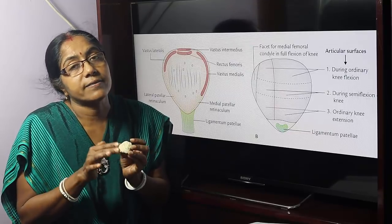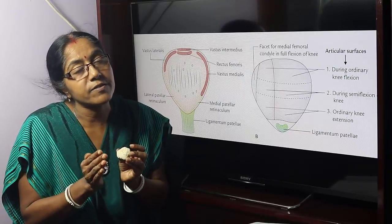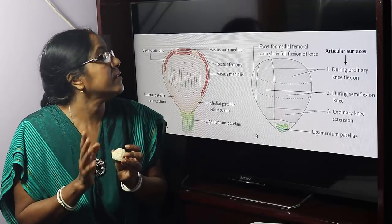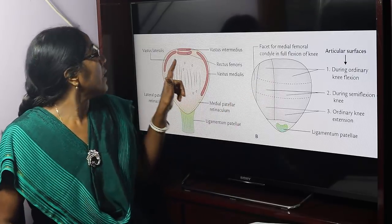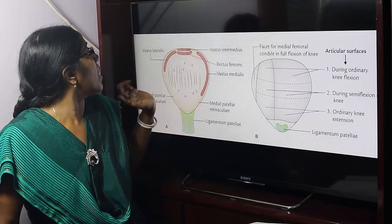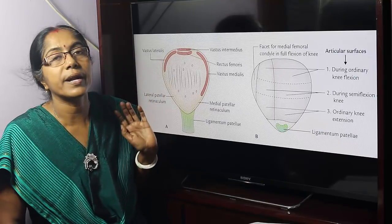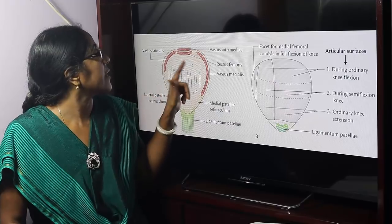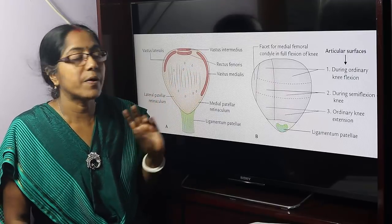The anterior surface is rough, convex, and subcutaneous. The pre-patellar subcutaneous bursa intervenes between the anterior surface and the skin. The lateral border is upper one-third, and the medial border provides attachment in its upper two-thirds.